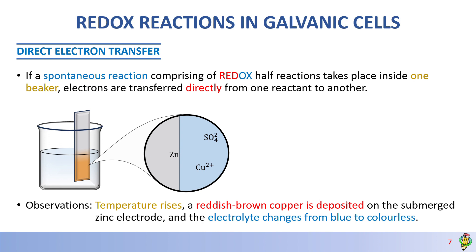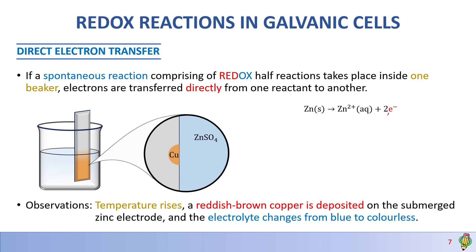Because copper 2+ is a strong oxidizing agent, it's going to cause zinc to lose its two electrons. The zinc 2+ will then go and form zinc sulfate. The copper 2+ will take those two electrons and become reduced into copper solid. This will continue to happen everywhere until the reaction reaches completion. We see that zinc solid becomes zinc aqueous because it loses two electrons, and those two electrons are then taken by copper, which becomes copper solid.